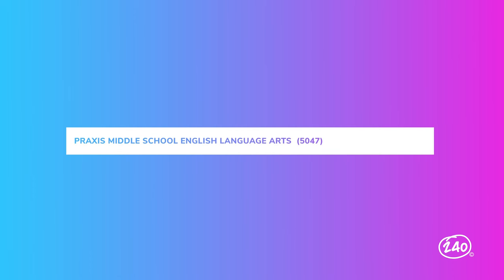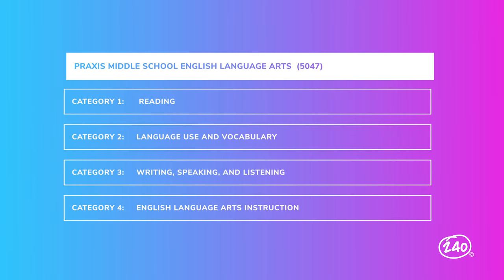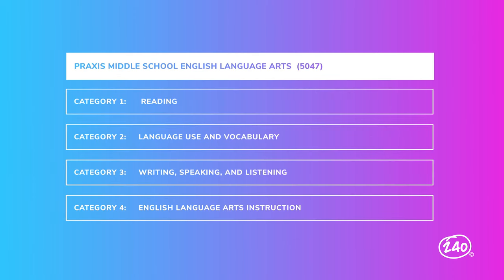Let's think of this like a great book we can't wait to dive into — yeah, a book we can't wait to dive into. The Praxis Middle School English Language Arts exam is made up of four content categories, which are the big areas. Each category is worth a certain percentage of your exam and has a certain number of questions.